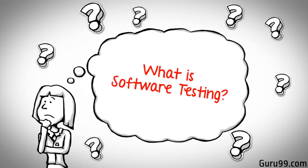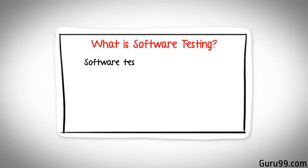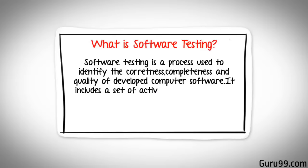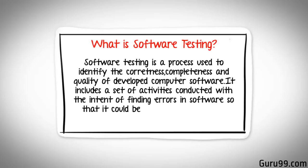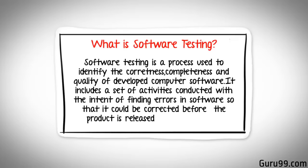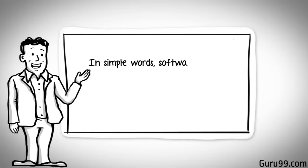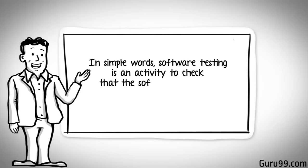What is software testing? Software testing is a process to identify the correctness, completeness, and quality of developed computer software. It includes a set of activities conducted with the intent of finding errors in software so that it could be corrected before the product is released to the end users. In simple words, software testing is an activity to check that the software system is defect-free.